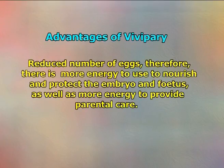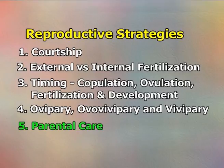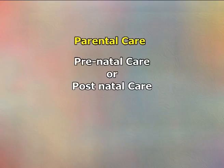Viviparity occurs in all mammals except the marsupials and monotremes, more than half of sharks and rays, and some invertebrates. Advantages of viviparity include a reduced number of eggs, therefore more energy available to nourish and protect the embryo and fetus, as well as more energy to provide parental care. Parental care is any behaviour in which a parent expends energy in order to improve the survival, conditions and future reproductive success of the offspring. Care can be given at two stages: either prenatal or postnatal.